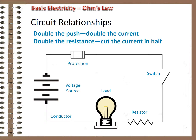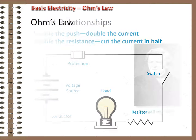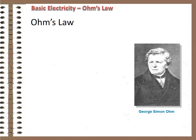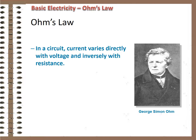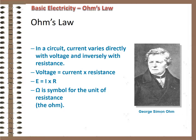Quite a few years back, a guy in Switzerland played around with simple circuits a lot and figured that rule out. If you double the push, you double the current. If you double the resistance, you cut the current in half. It works all the time, in every circuit. So we named the law and the unit of resistance after him — George Simon Ohm — just like volts are named after Alessandro Volta, amps after Andre Ampere, and watts after James Watt. Ohm said current varies directly with voltage and inversely with resistance, and we can turn that into a formula: voltage equals current times resistance, or using common symbols, E equals I times R.